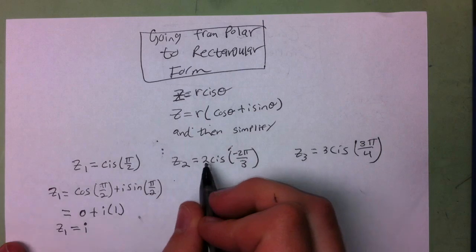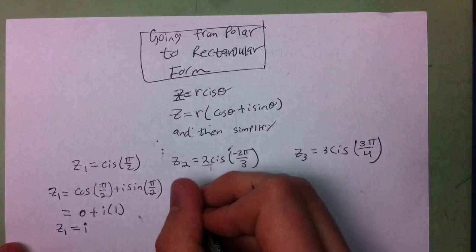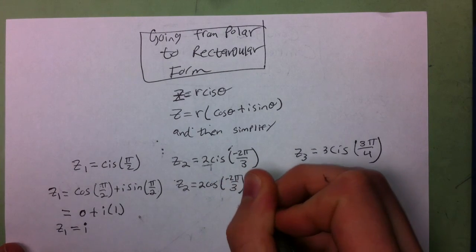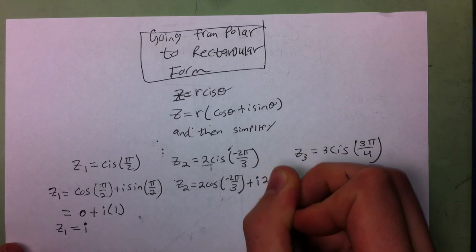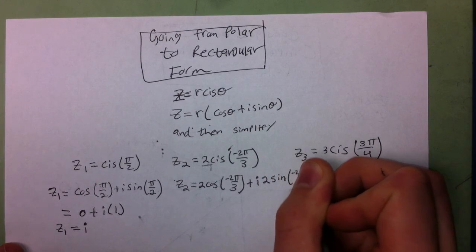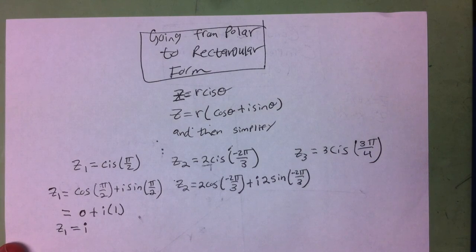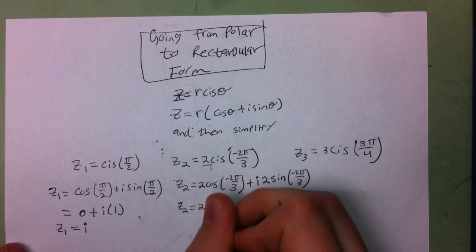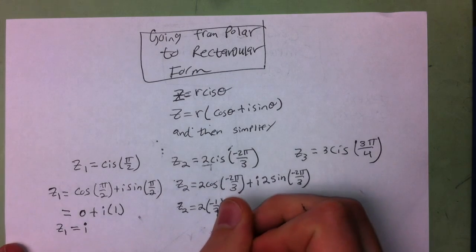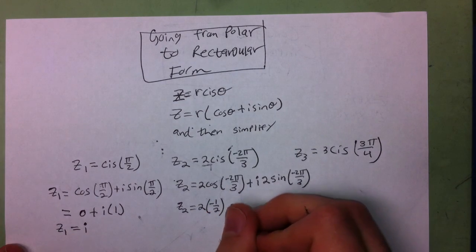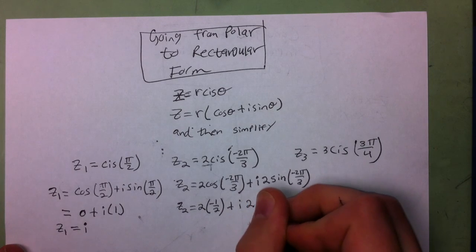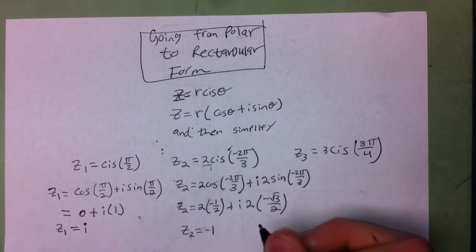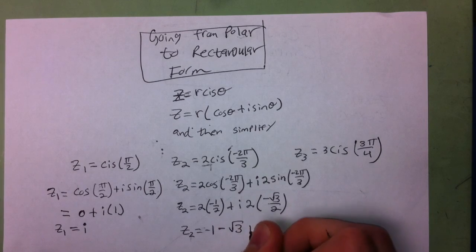For z₂, we do the same thing, except this time we have to remember to distribute the 2. So z₂ equals 2*cos(-2π/3) plus i*2*sin(-2π/3). Here we have z₂ equals 2 times negative 1/2 plus i*2 times negative √3 over 2. So z₂ equals negative 1 minus √3*i.